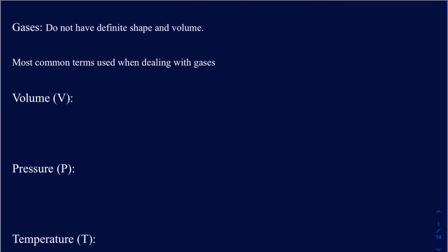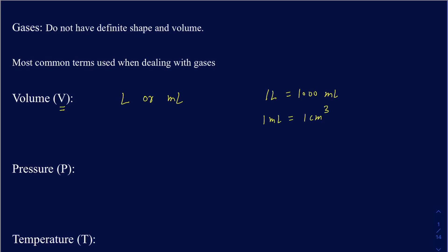The first term is volume. The symbol for volume, which we'll be using throughout this lecture, is an uppercase V. Volume is measured in liters or milliliters. There are times when you can use milliliters, but there are times when you must use only liters. Make sure you know the conversion factor: one liter equals 1,000 milliliters, and one milliliter equals one centimeter cubed.